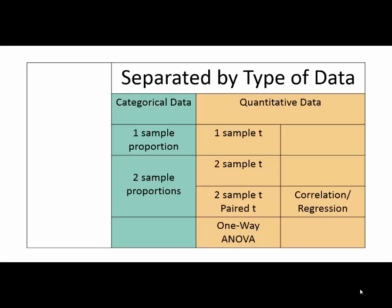Categorical data tests are shown in a teal background — when I have categorical data, I'm dealing with proportions, and both tests are about proportions. My other tests all require quantitative data, in an orange background. If you tried to do any of those tests with categorical data, it wouldn't be possible. In fact, for all of them except correlation and regression, you're comparing means — and you can't take the mean of data if it isn't quantitative.